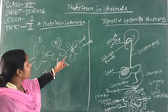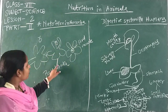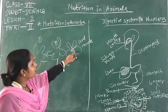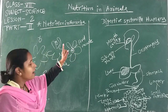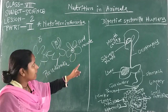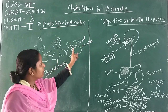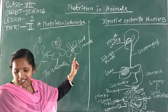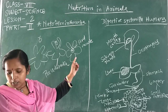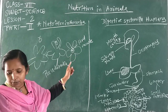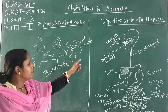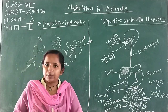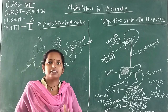The pseudopodia surround food particles and slowly ingest them completely. This food is then digested in the food vacuole. The pseudopodia surround the food and the food particles with a drop of water form a food vacuole. In this way, the five stages of nutrition also occur in amoeba.